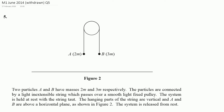Question five is all related to dynamics. We're told about a situation where we've got two particles moving over a pulley. From the masses given, the greater mass is on the right side, causing acceleration downwards on the right and upwards on the left. The string also has tension forces acting upwards on both sides.